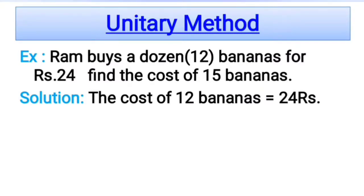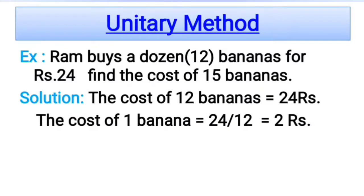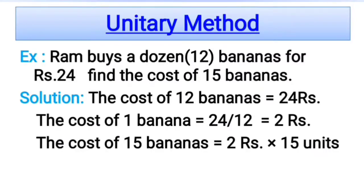The cost of 1 banana is total value divided by number of units, equals 24 divided by 12, equals Rs.2. So the cost of 1 banana is Rs.2. Now to find out the cost of 15 bananas, we multiply it by 2. The cost of 15 bananas equals 2 multiplied by 15, equals Rs.30.